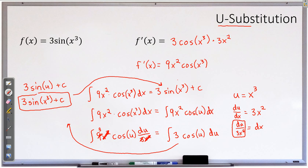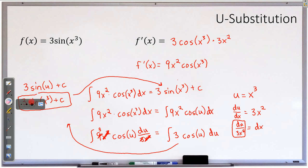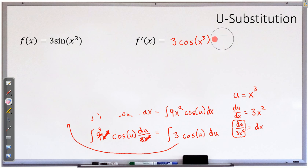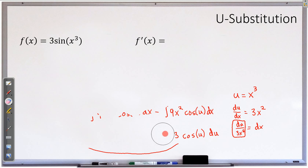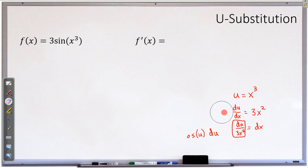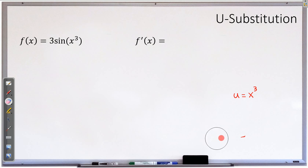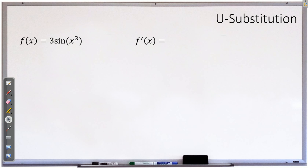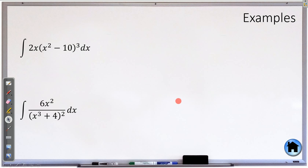So that is u-substitution. It looks like a lot because we had many extra steps at the beginning, but it's actually not that bad. It is one of our main strategies for taking integrals when they don't work out nicely at the start. Let's do one or two more examples to practice, because one question you're probably having is: how did we know that u was supposed to be x cubed? That's going to take just a little bit of practice, but you'll get the hang of it pretty quickly.